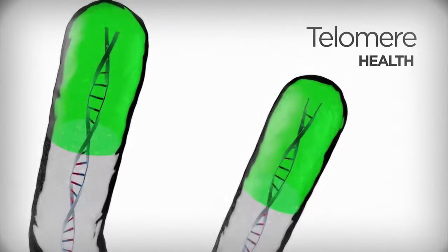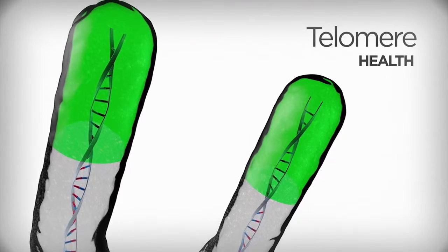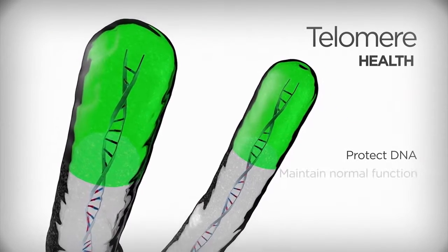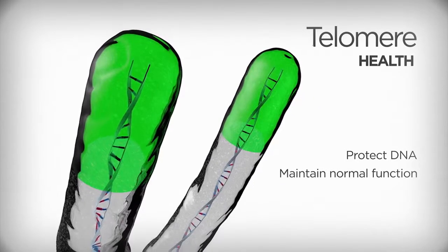Telomeres are the tips of our chromosomes. Like the tips of a shoelace, they protect our DNA from unraveling and many other potential sources of damage that would otherwise impair the normal function of the genes.